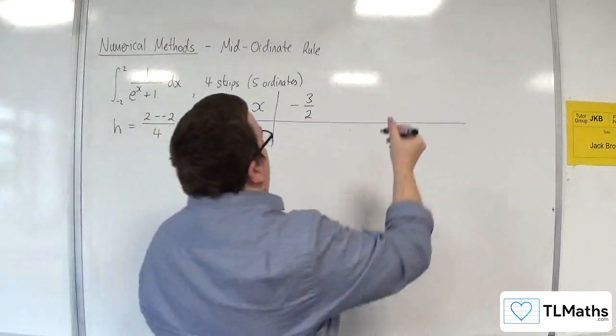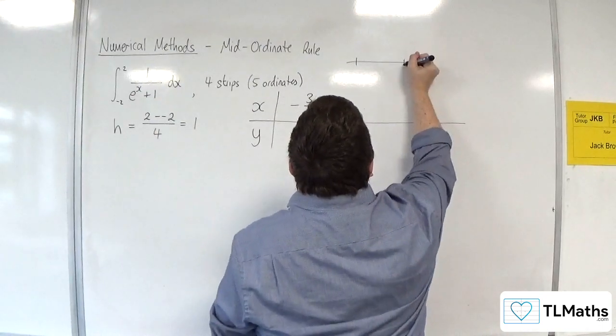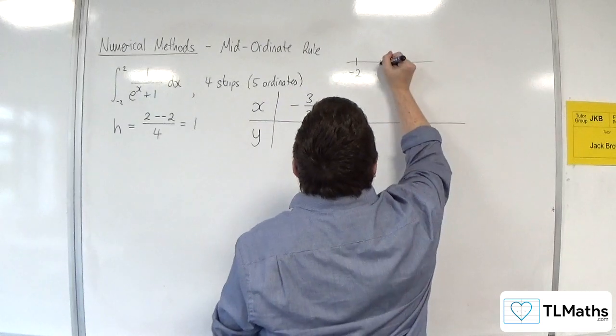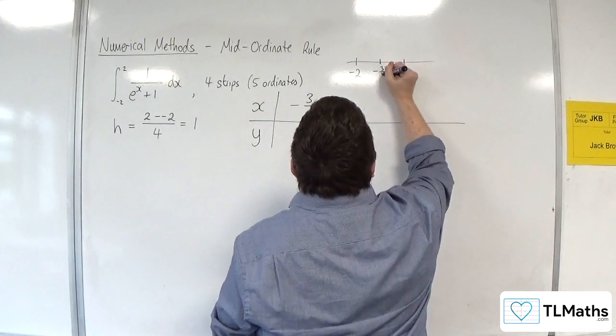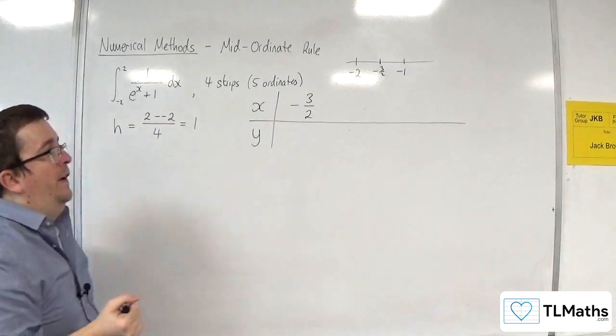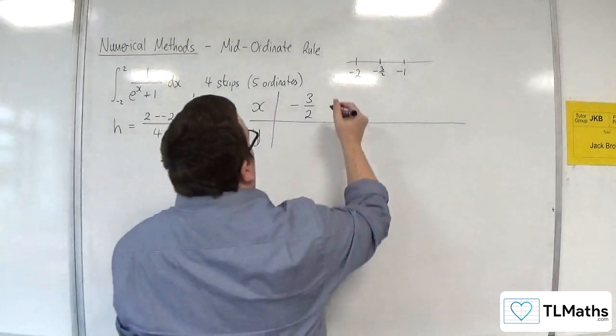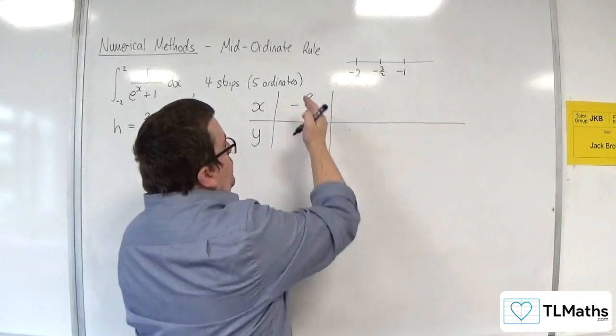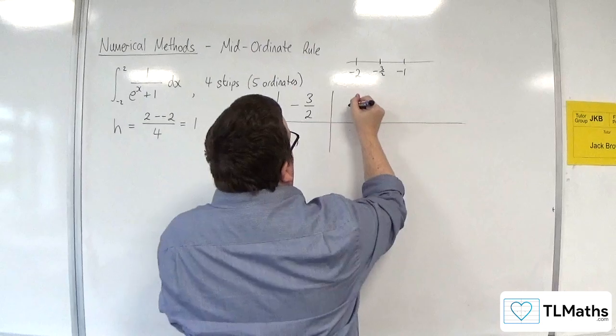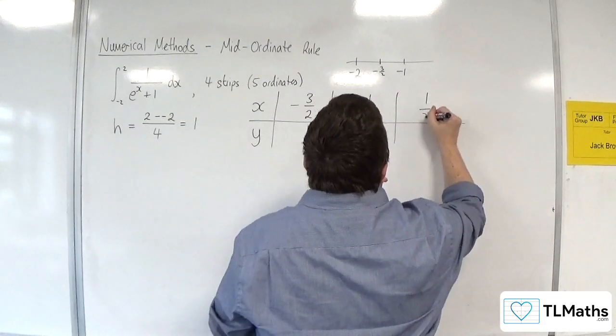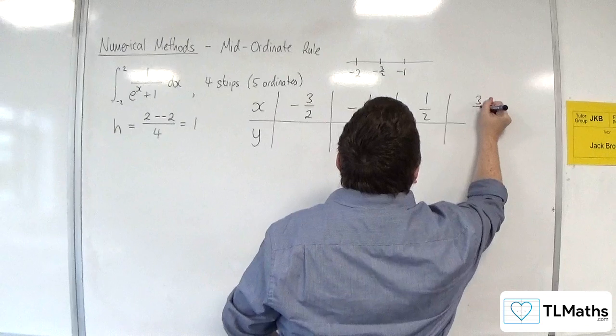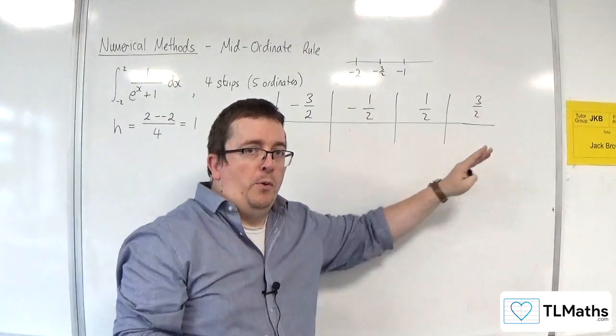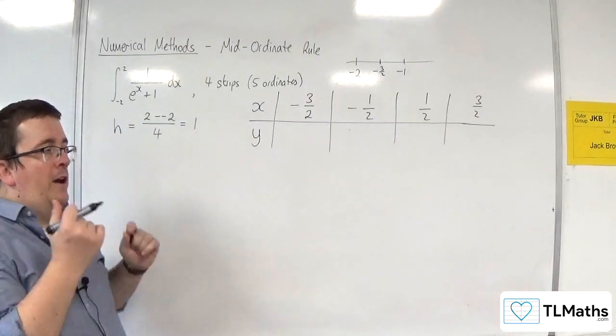So think of it. If you want to draw a little diagram, you can. So minus 2 to minus 1, this is going to be the first strip, but the mid-ordinate will be at minus 3 halves. So that's the first value I want to put in. From then on, as I bunny-hop my way along, I just need to add 1 to each of these. So I should get minus 1 half, 1 half, and then 3 halves. And they will be the 4 mid-points that I need for my 4 strips.